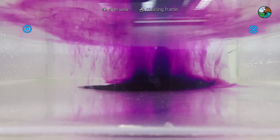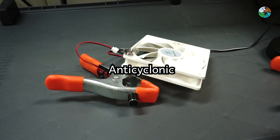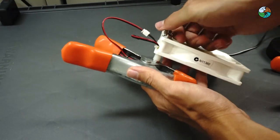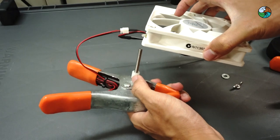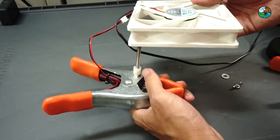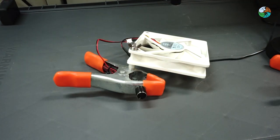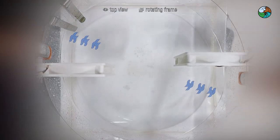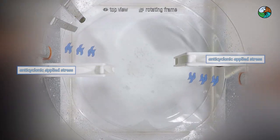We now change the direction of the wind from cyclonic to anticyclonic. Reverse the blowing direction of the fans. Anticyclonic applied stress means the wind direction is opposite to the rotating direction of the tank.